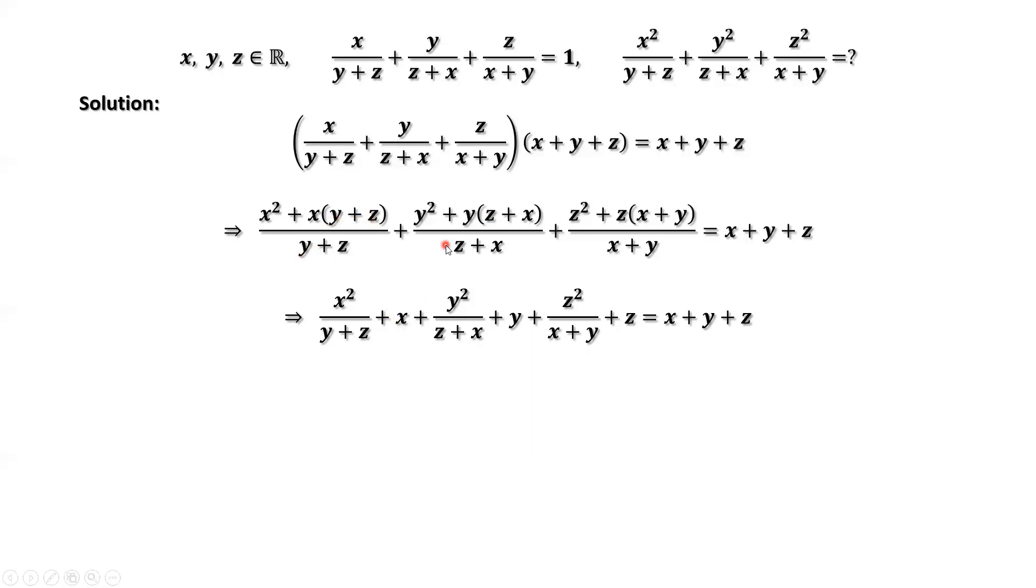Similarly, for the second term, we split it into two parts. y squared over z plus x. y times z plus x divided by z plus x equals y.